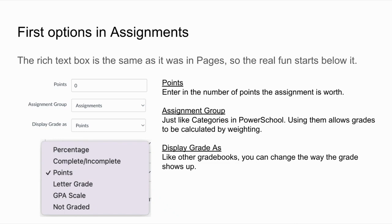The first options in assignments will have the rich text box just like in pages, and then come the assignment-specific settings. Points is the number of points the assignment is worth. The assignment group — think of that like categories in PowerSchool — if you're using category weighting, this is where you assign which category the assignment belongs to. Display grade as has several options: percentage (zero to 100), complete/incomplete (with options for completed, incompleted, not turned in, or ungraded), points, letter grade, GPA scale (zero to four), or not graded.